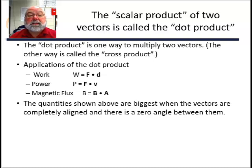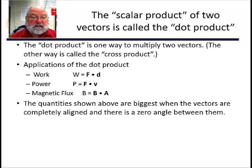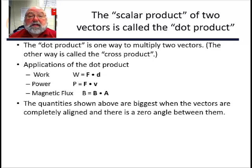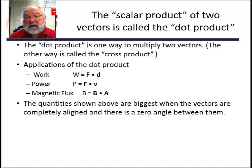In electricity and magnetism we calculate the magnetic flux dotted with the current. When you dot something, the quantities are biggest when the two vectors are in line with each other — parallel. You get the same value if they're anti-parallel, but it's negative. And it's zero when the two vectors are perpendicular.